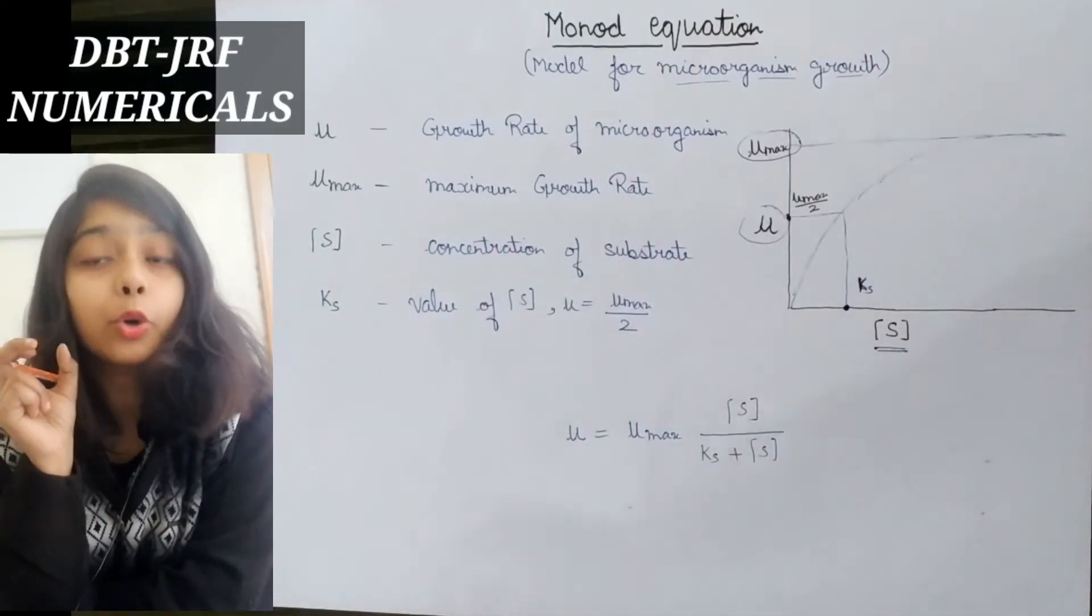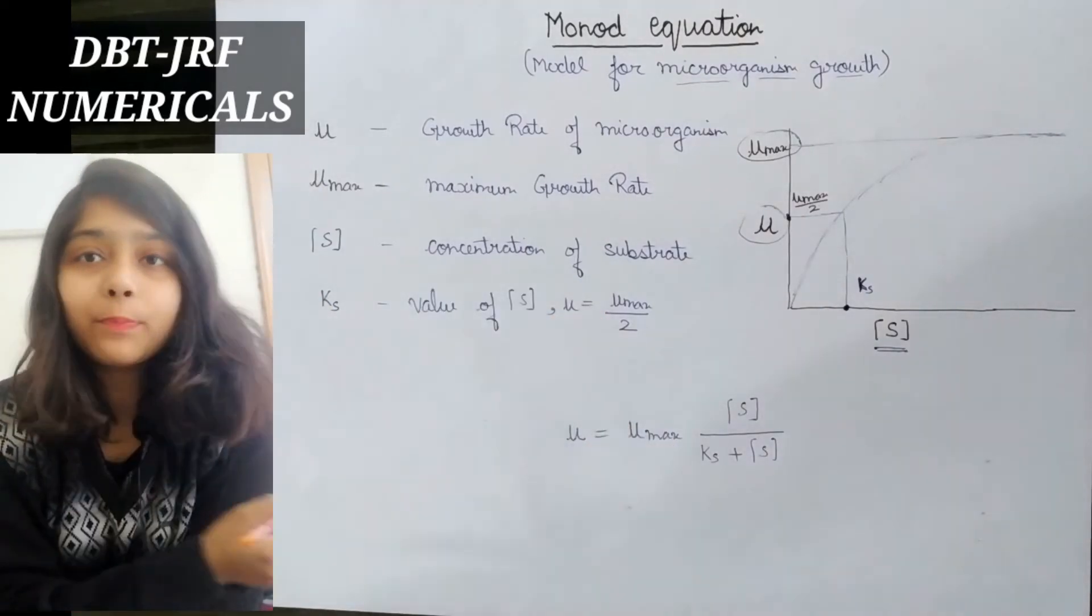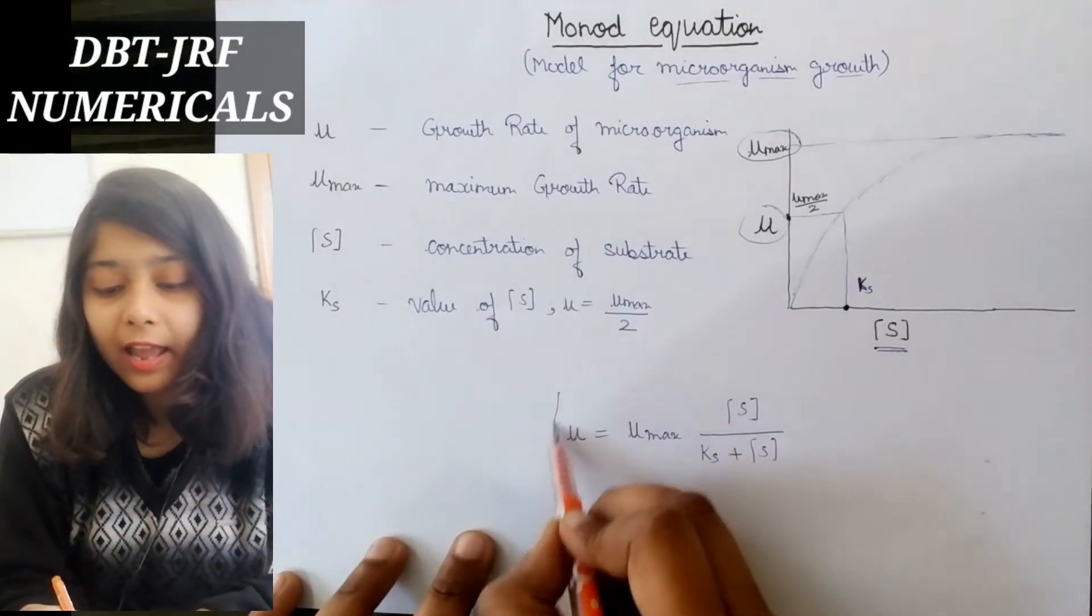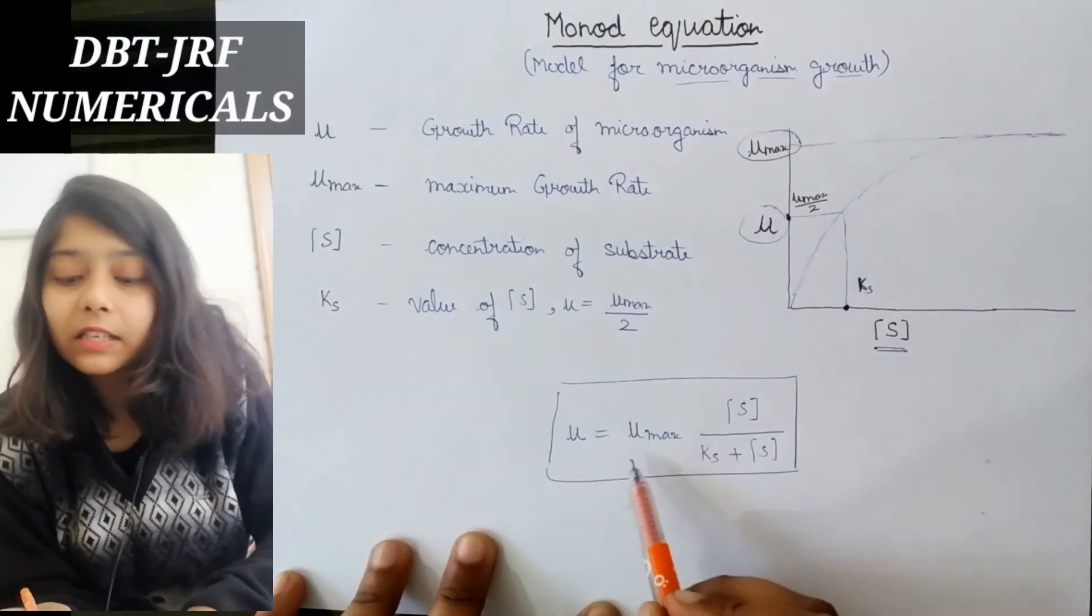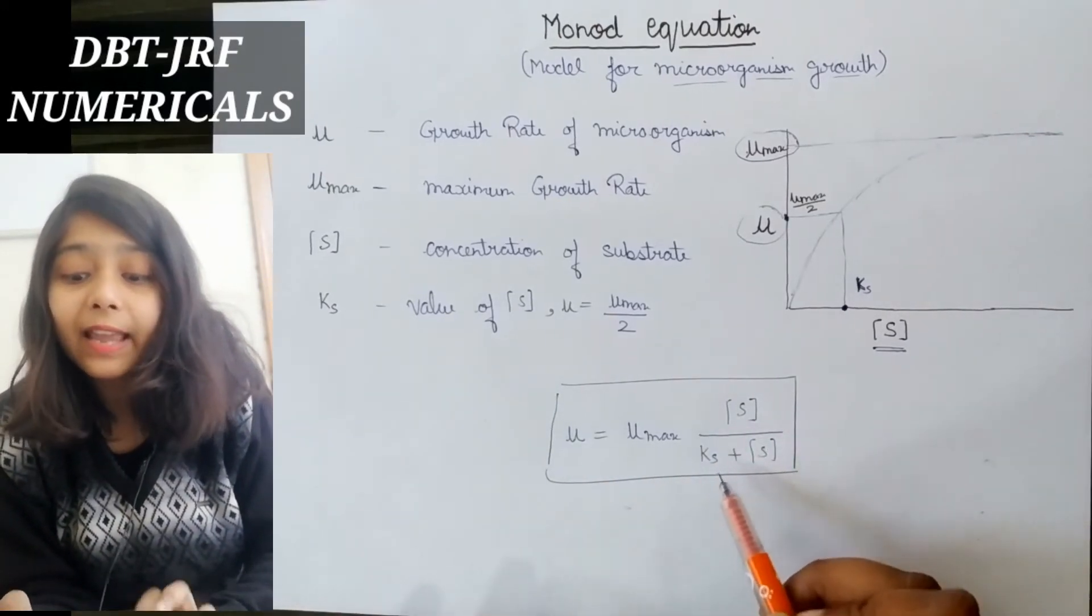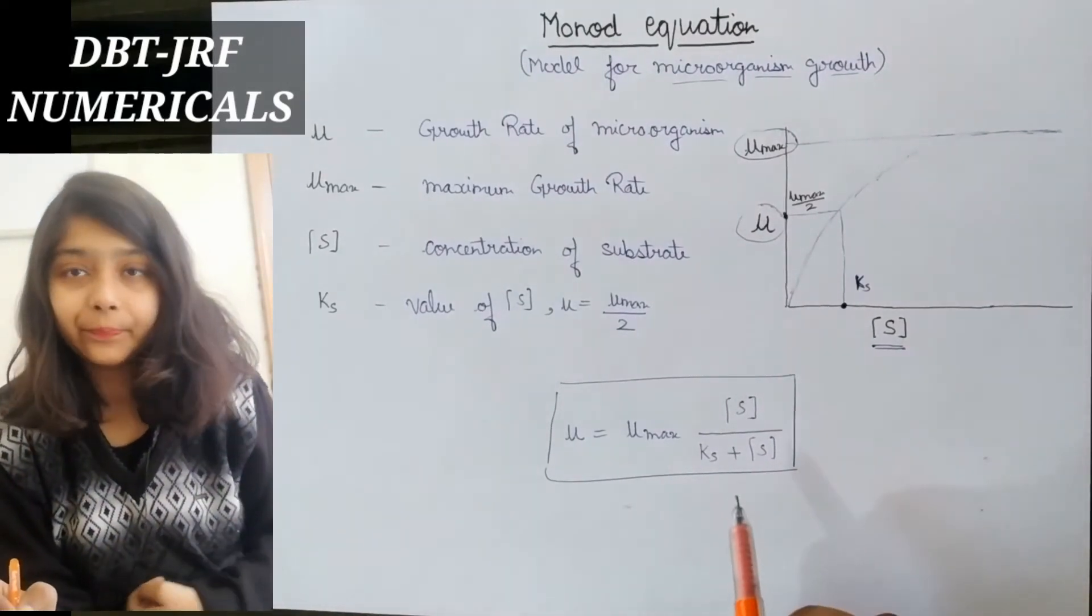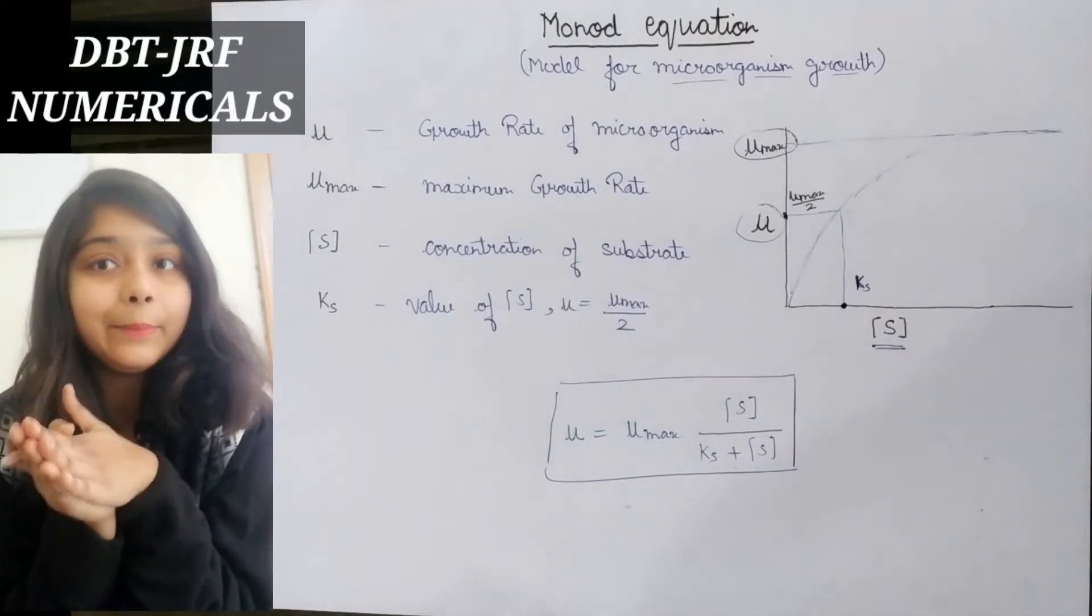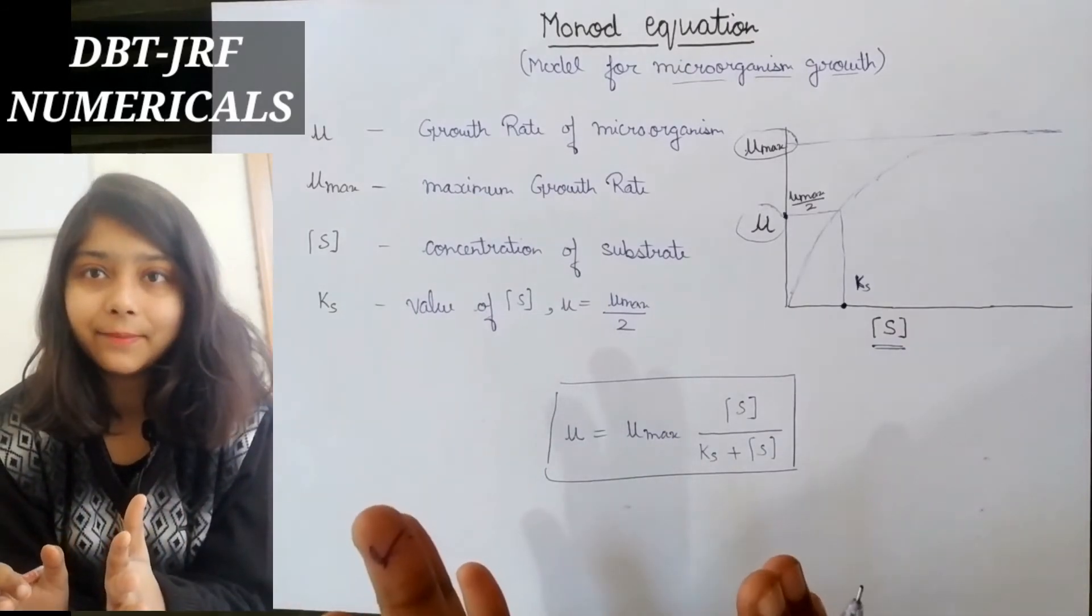So Monod equation formula is: mu equals mu max multiplied by substrate divided by ks plus substrate. Whatever questions come in DBT-JRF, they are based on this Monod equation formulation.